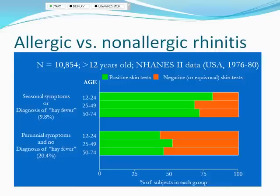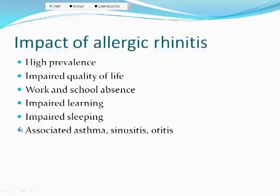The prevalence of rhinitis in the United States is about 30 percent. About a third of that is seasonal and two-thirds is perennial. Overall, about 60 to 65 percent of patients will have positive skin tests, with more positive results in those with a history of seasonal versus perennial symptoms.